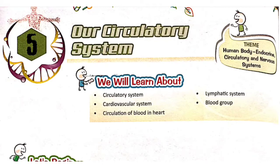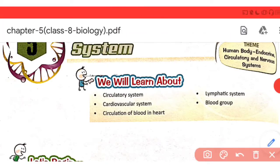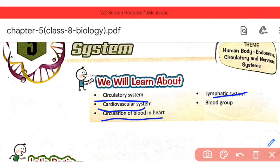We will discuss the circulatory system of human beings, dealing with blood, lymph, and the modes of circulation in the body. There are five points we will study in this chapter: circulatory system, cardiovascular system, circulation of blood in heart, lymphatic system, and blood groups.